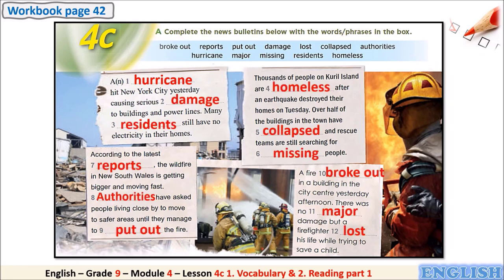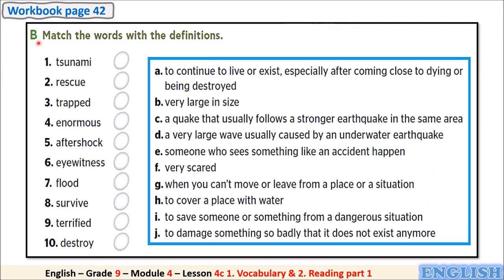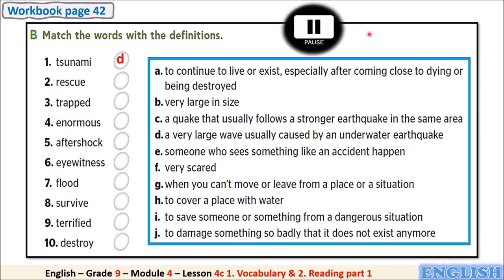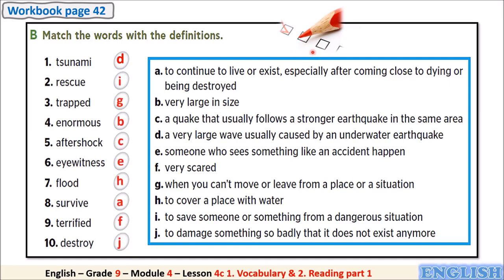This is exercise B in the workbook page 42: match the words with the definitions. We have 10 words and 10 definitions. Let's do the first one as an example — 'tsunami': a very large wave usually caused by an underwater earthquake, which is definition D. Now pause the video, then match. Let's check your answers — wonderful, my students!